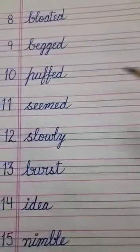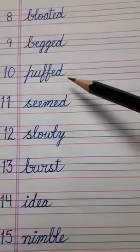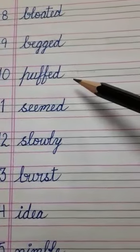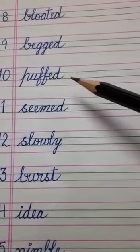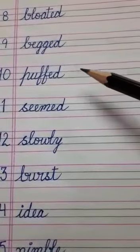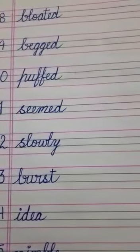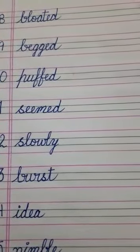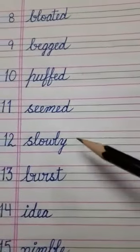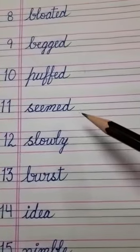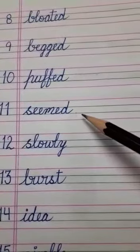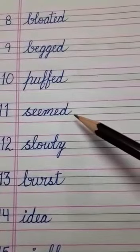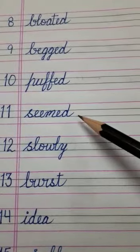Number 10 is puffed, P-U-F-F-E-D, puffed. Puffed ka matlab hota hai pheula hua — like popcorns are puffed, that is pheula hua. Number 11 is seemed, S-E-E-M-E-D, seemed. Seemed ka matlab dikhai dena ki kaisa lag raha hai — to appear a certain way.